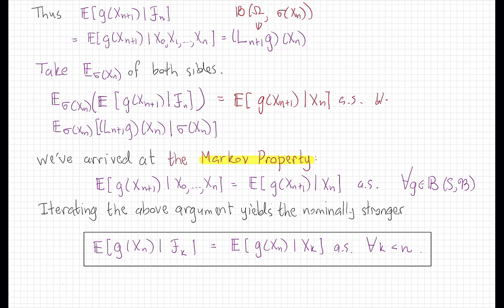And again, that's just because σ(X_n) is contained in F_n, and the tower property for conditional expectation. Whereas this, already measurable with respect to X_n, if further conditioned on σ(X_n) isn't actually further conditioning at all, we just get the same thing back. But that is equal to this conditional expectation on the larger sigma field.